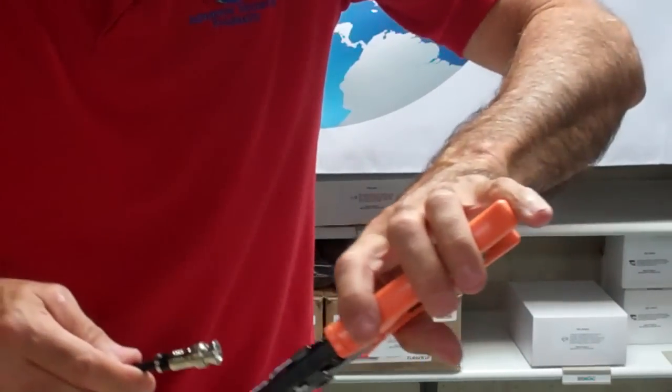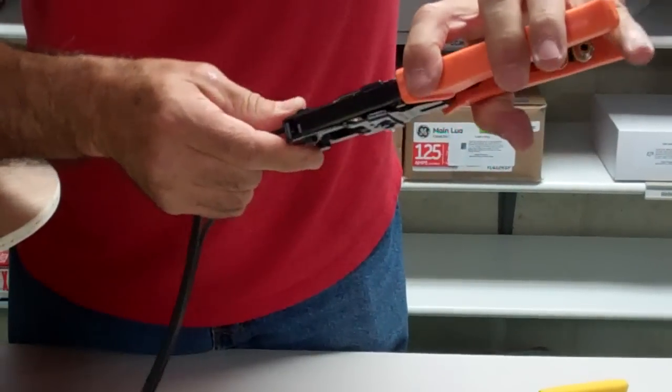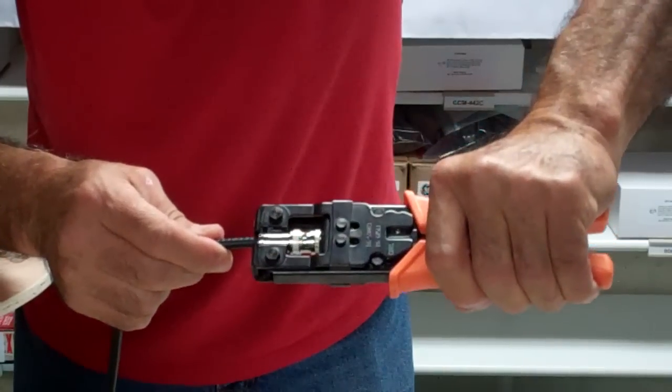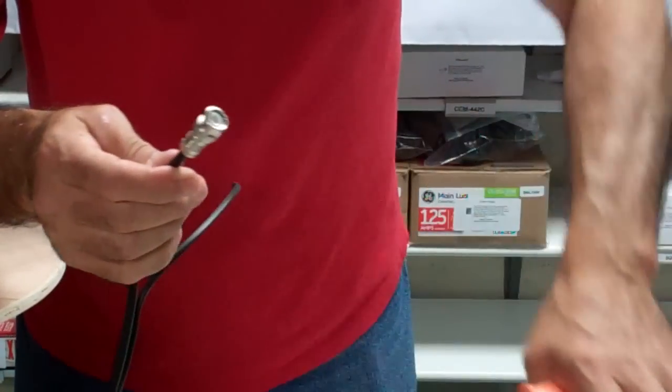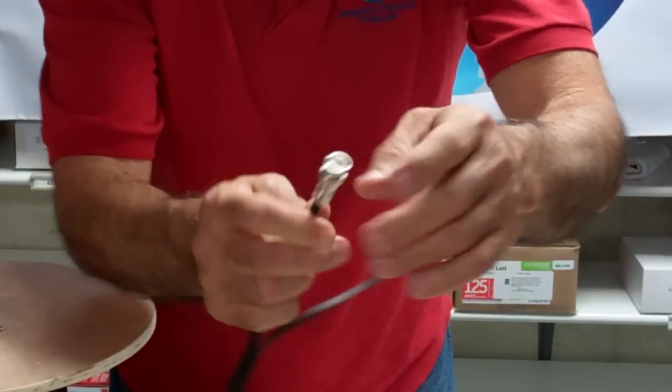Compression connector. You put it in here and it pretty much only goes in one way. You squeeze all the way down and now you see where that black part went away. Squeeze it in there.